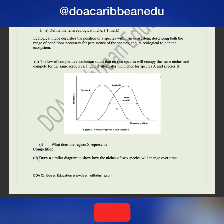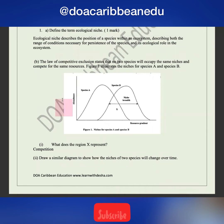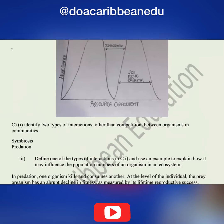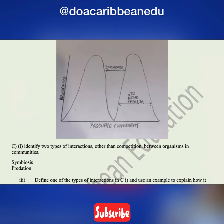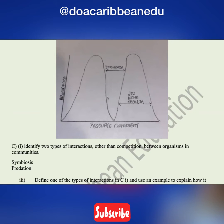Part two says: draw a similar diagram to show how the niches of two species will change over time. I have done this on a piece of blank paper. After a while, there's going to be divergence between Species A and Species B.